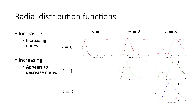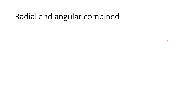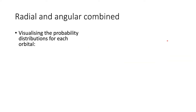It appears that increasing l decreases the nodes, in contrast to increasing n. But remember, we're only seeing part of the picture — we're looking at the radial function, but we need to combine the radial with the angular. So what we need to do is visualize the probability densities for each orbital.